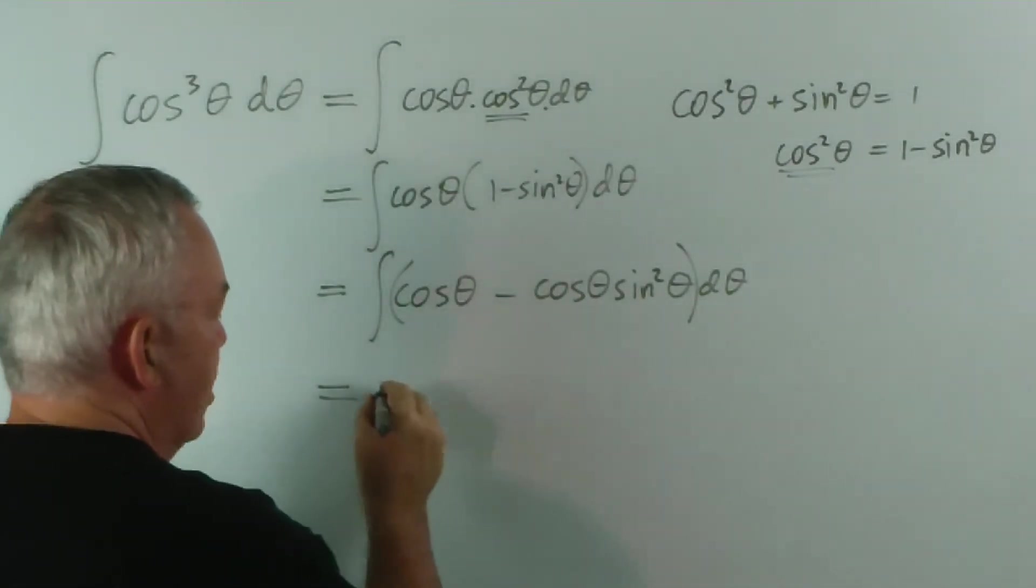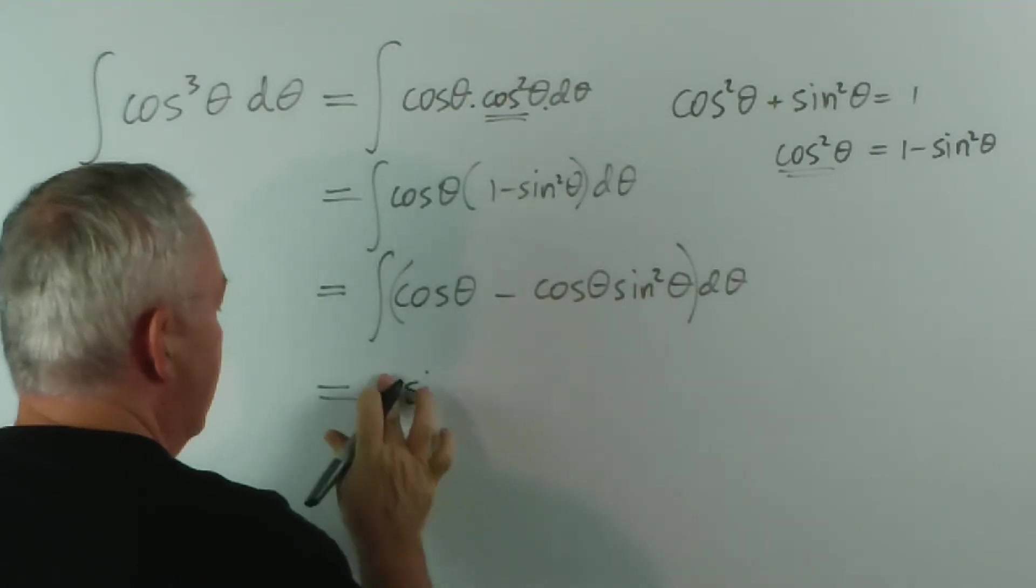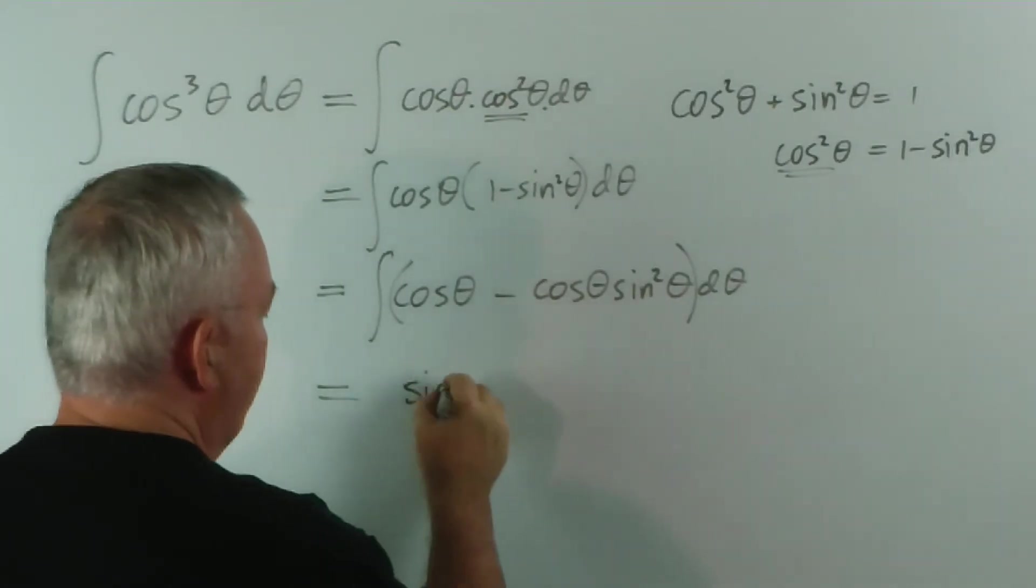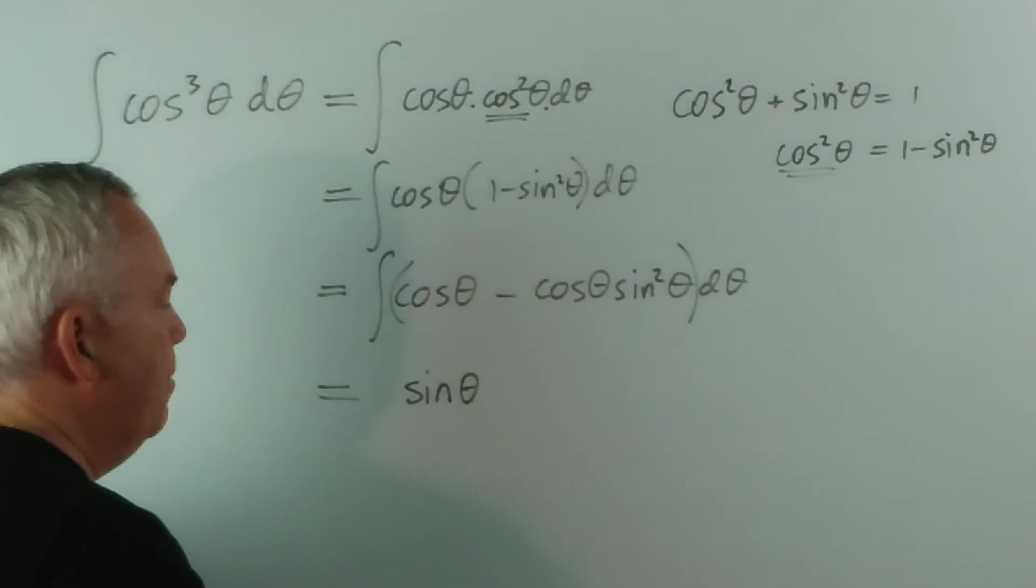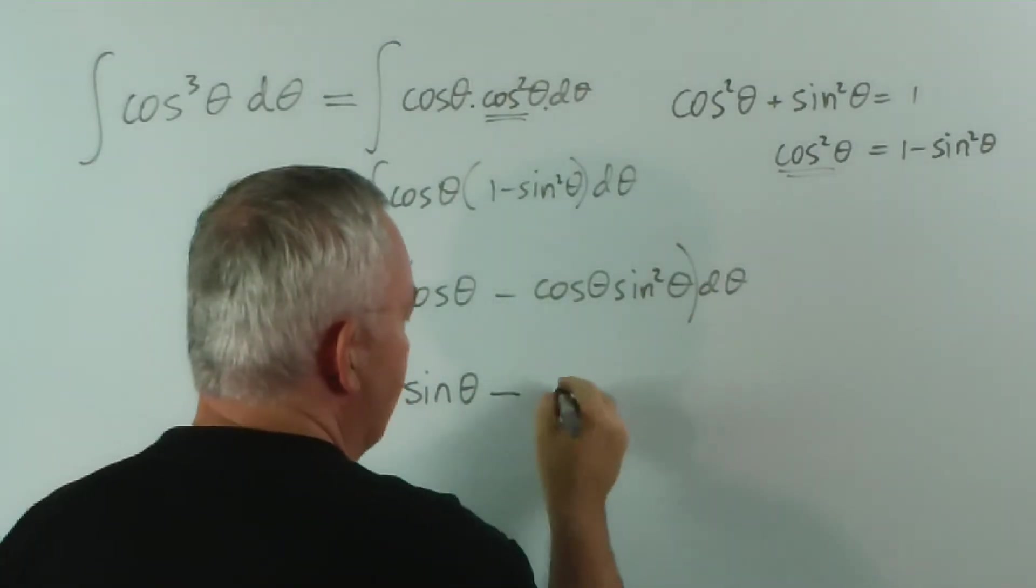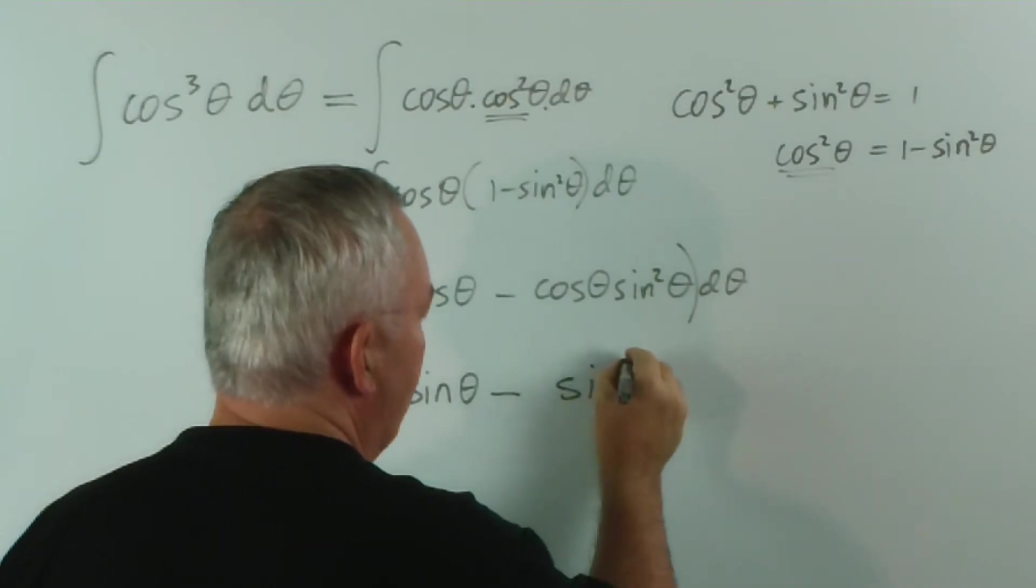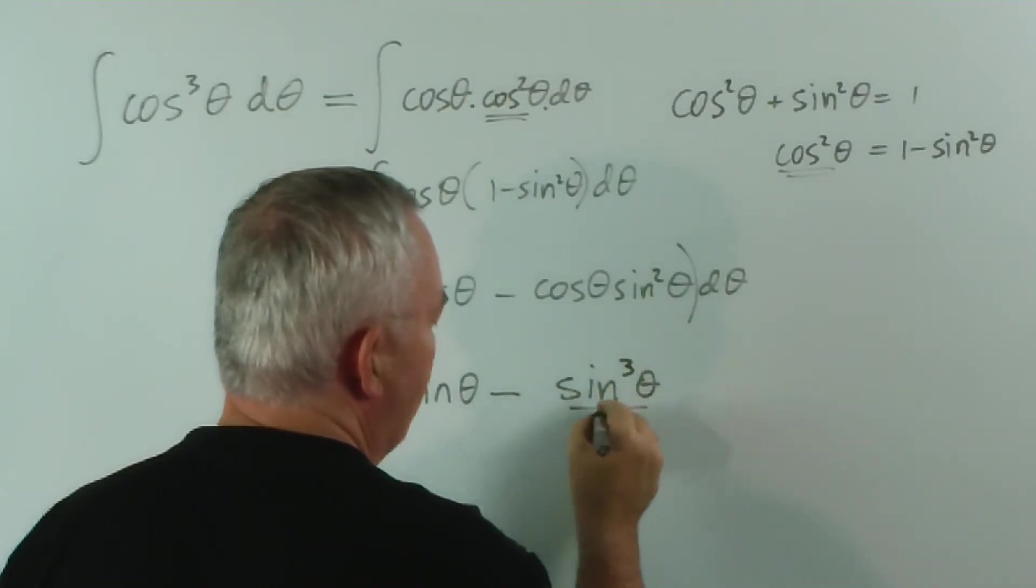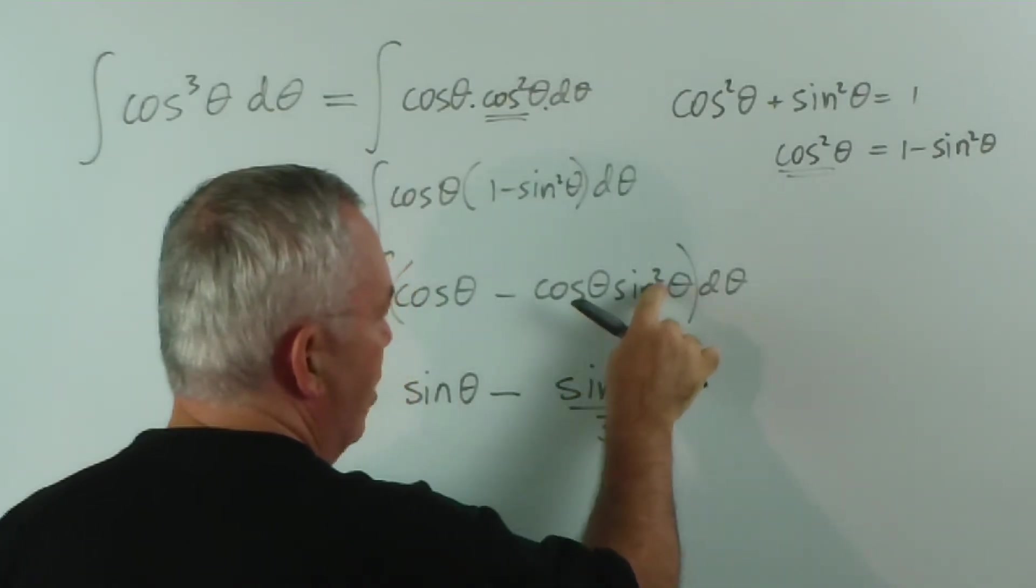The integral of cos θ is — sorry, is sin θ. I'm ahead of myself. I'm just not thinking. Minus — the integral of this is going to be sin cubed θ over 3. We increase that power by 1.